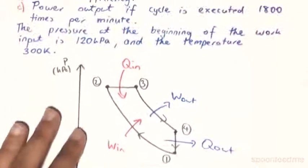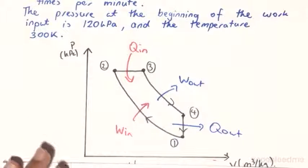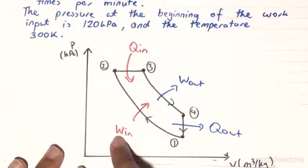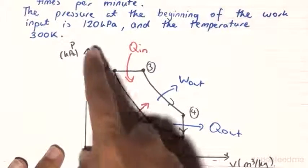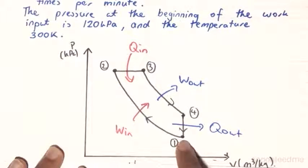So if we have our PV diagram over here, we have the isentropic compression, which is the work input. And so therefore, when he says the pressure at the beginning of the work input, that is referring to the pressure at state 1, and the temperature at state 1.